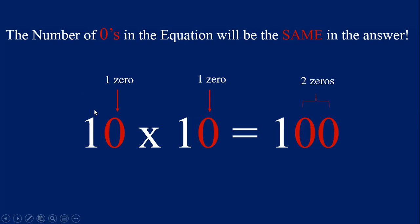Start with your ones: what is 1 times 1? 1 times 1 is 1, so we write that first — that's the first part of our answer. Now count the zeros in the equation: there's one zero in the first 10 and one zero in the second 10, so there are two zeros in the equation. We write two zeros in the answer after that first 1, and we know 10 times 10 equals 100.